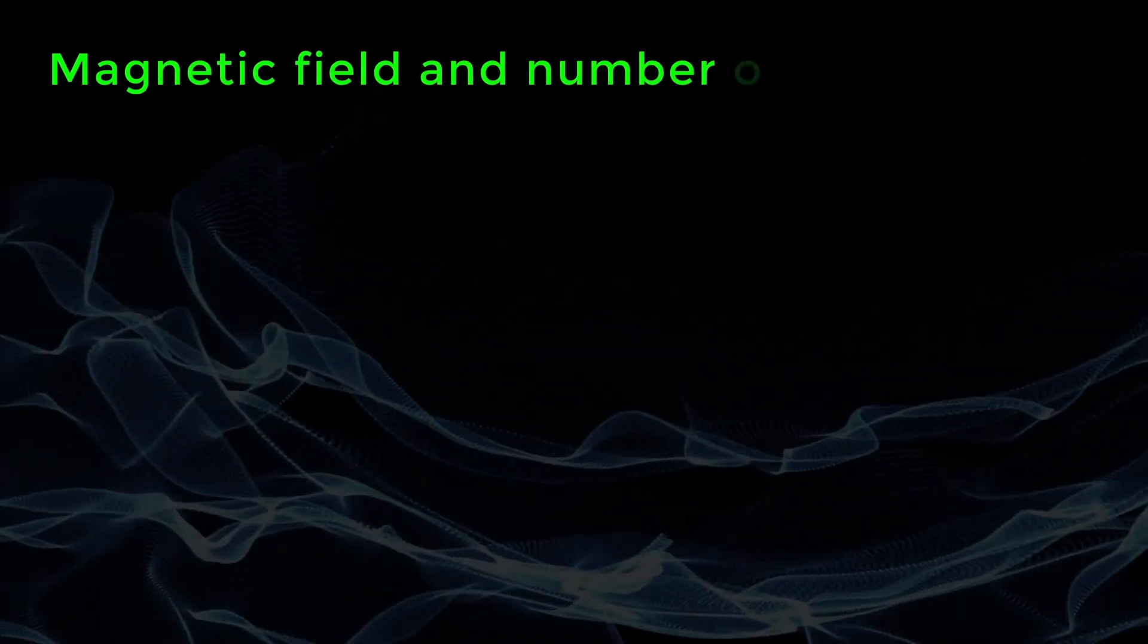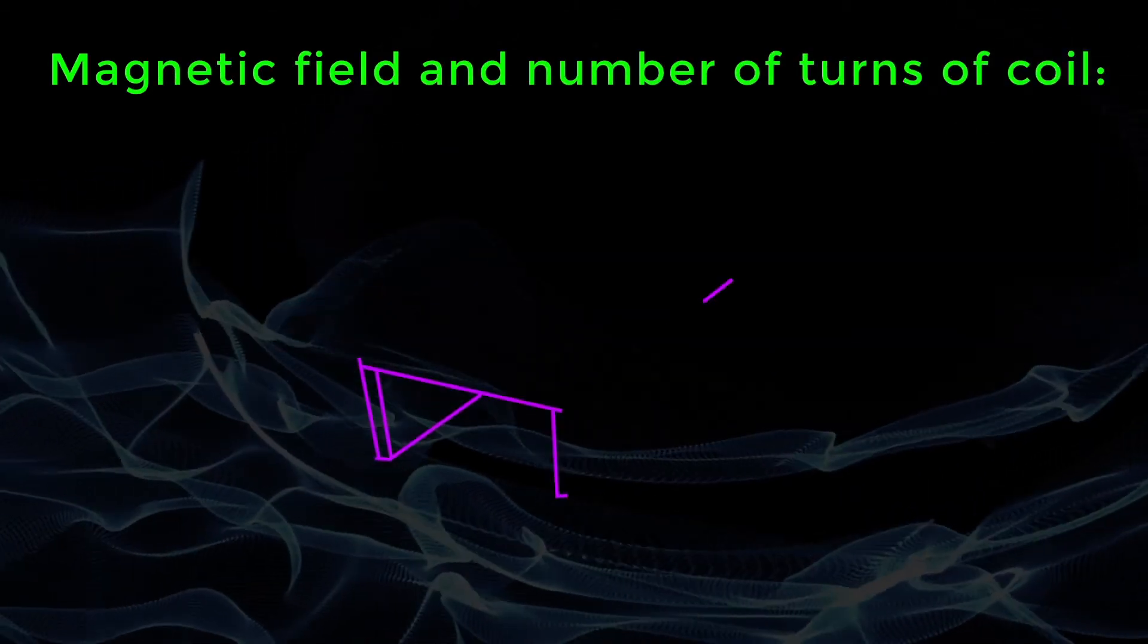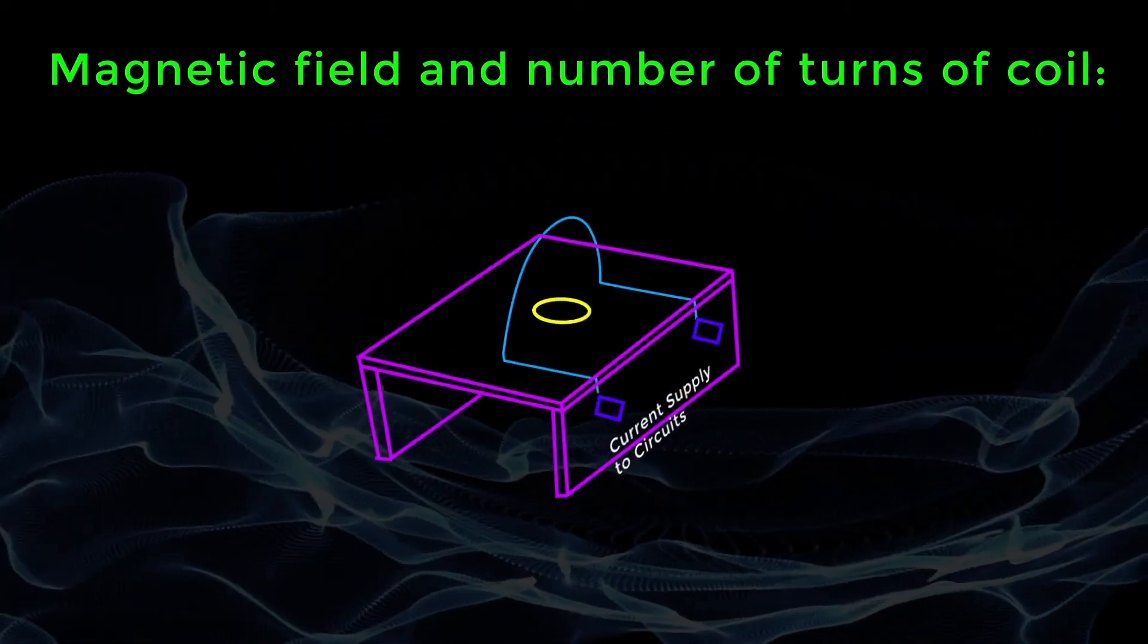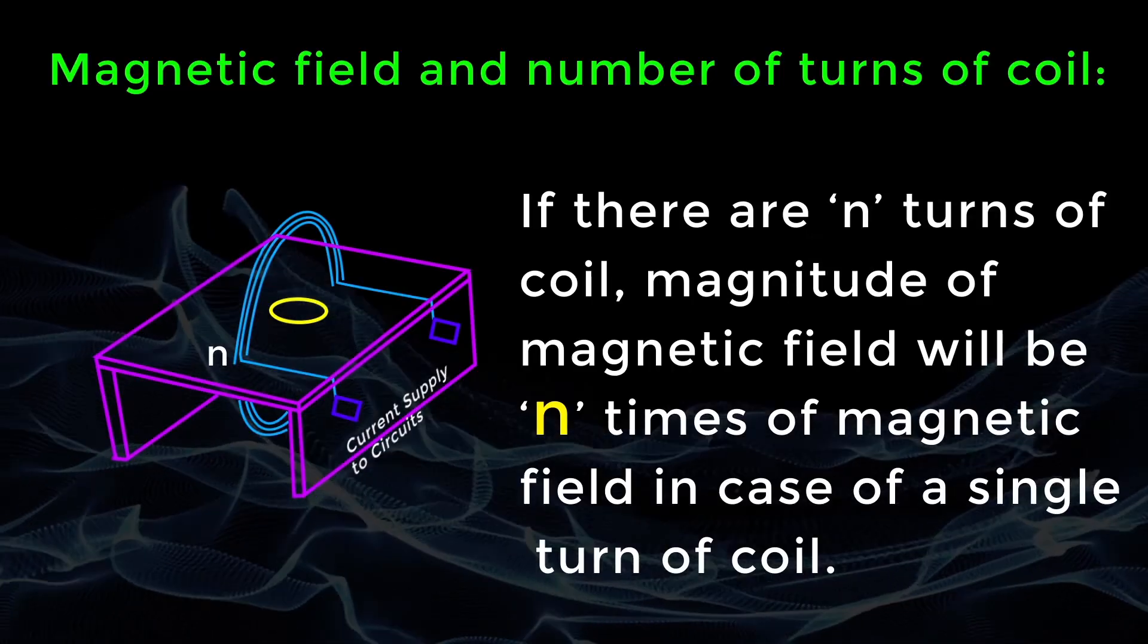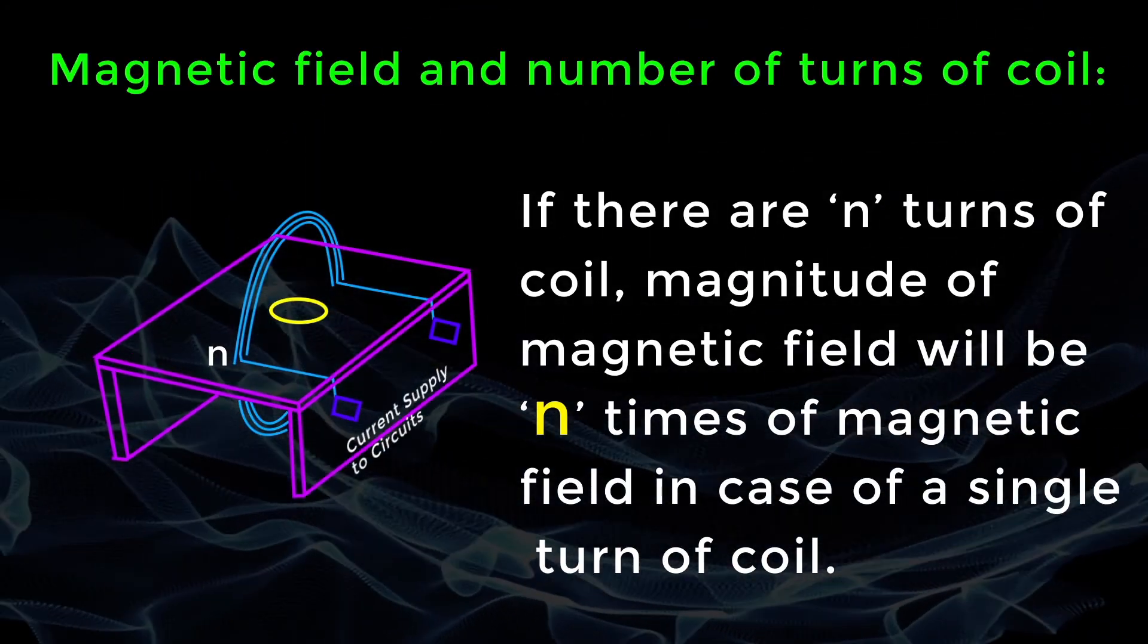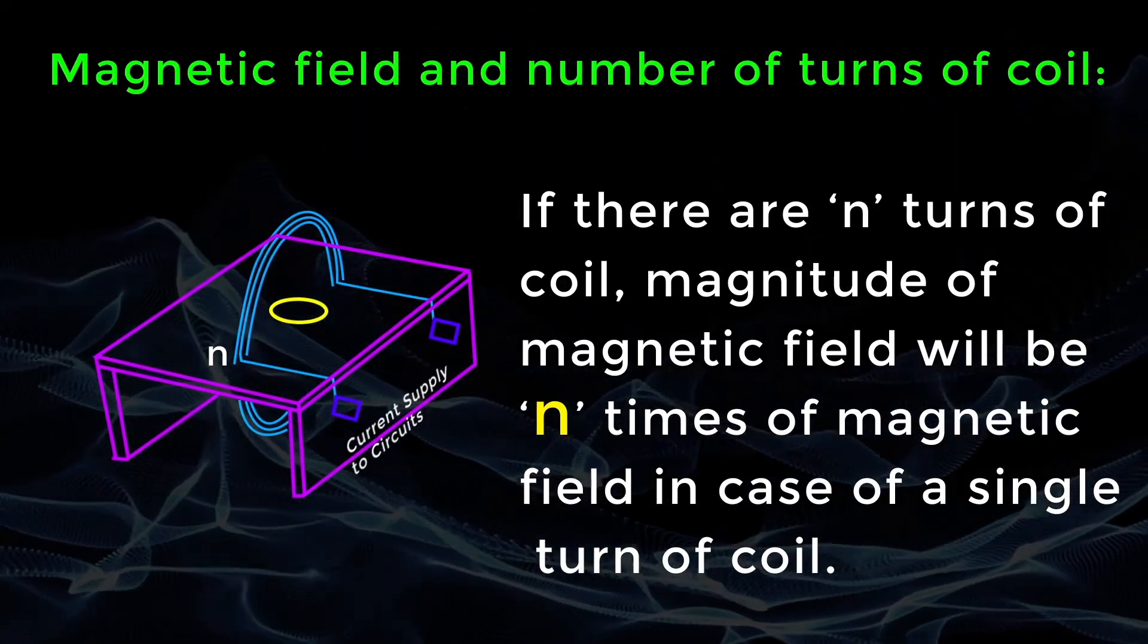Magnetic field and number of turns of coil. Magnitude of magnetic field gets summed up with increase in the number of turns of coil. If there are n turns of coil, magnitude of magnetic field will be n times of the magnetic field in case of a single turn coil.